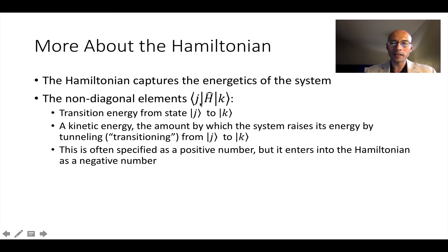Now let's talk about the off-diagonal elements. The non-diagonal elements, J-H-K, are transition energies from state J to state K. You can think of this as a kinetic energy, the amount by which the system can raise its energy by transitioning or tunneling from J to K. So to make a tunneling event favorable, we actually want a negative value. So sometimes we're going to refer to these as positive numbers, but usually we want them to enter into the Hamiltonian as a negative number because we want the system to favor or support some kind of tunneling. So it's going to want to lower its energy. Therefore, we're going to want a negative tunneling energy.